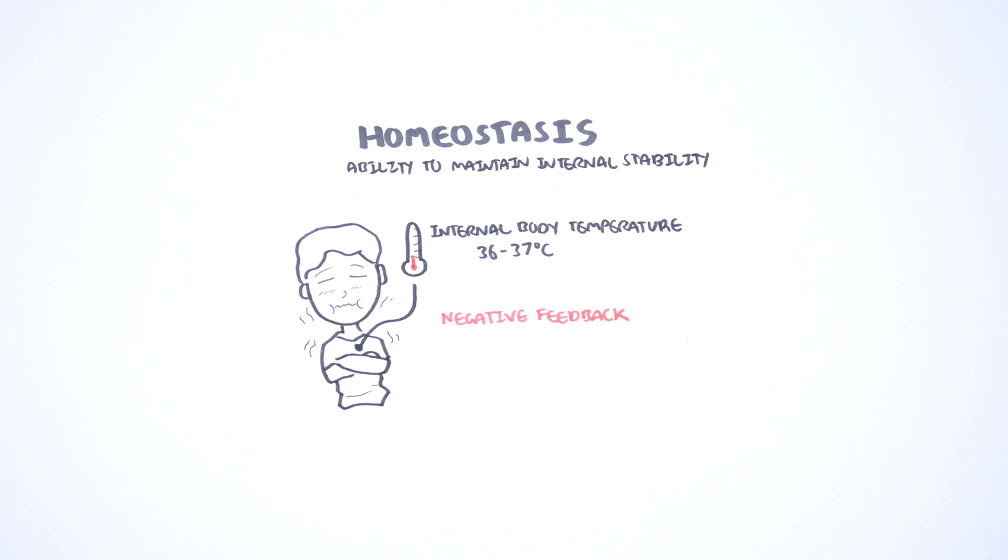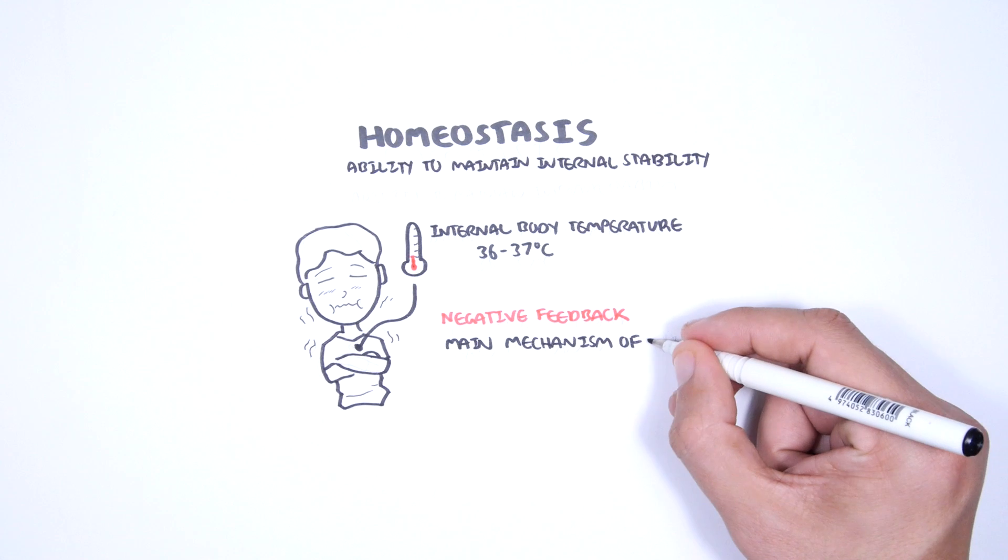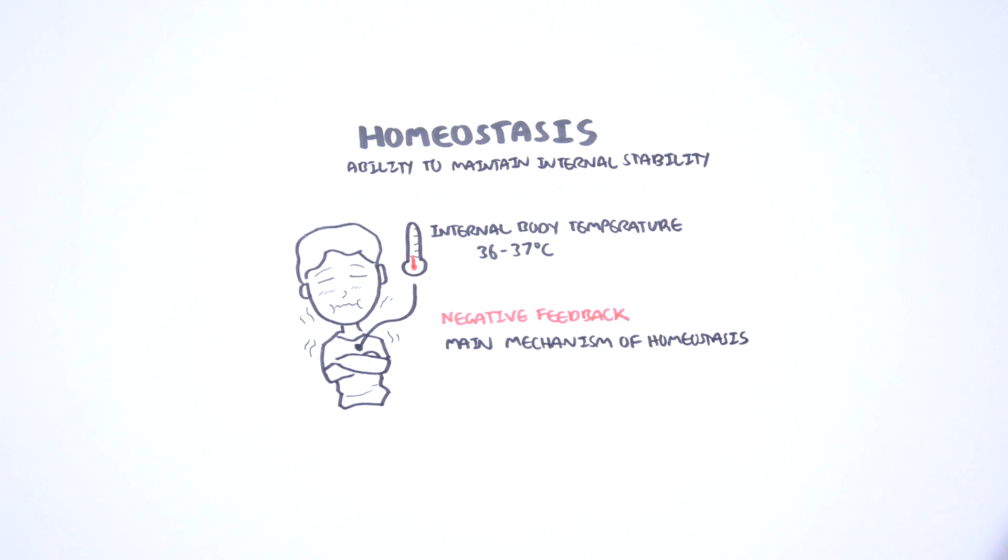The main mechanism to maintain a homeostatic environment is through negative feedback. Negative feedback is where the body senses change and activates mechanisms that negate or reverse it.